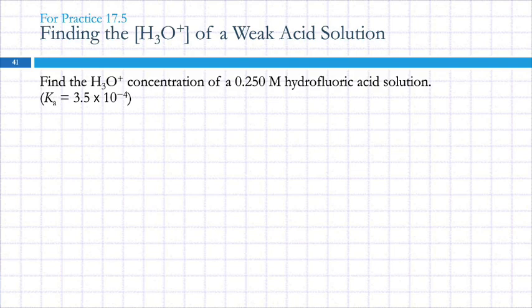So, find the H3O plus concentration of a 0.250 molar hydrofluoric acid solution. Ka equals 3.5 times 10 to the minus 4.